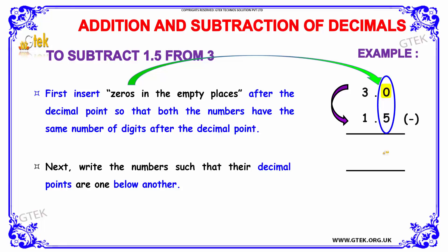If we subtract 0 minus 5, 0 cannot be subtracted from 5, so we borrow from the previous term. When we borrow, the 3 gets cancelled and becomes 2, and 1 is moved over, making the term 10. When 10 is subtracted from 5, we get 5. Since it is now 2, subtracting 1 from 2 gives 1. So the answer is 1.5.